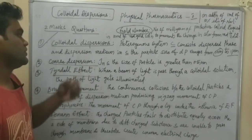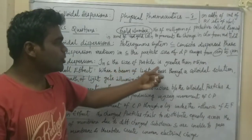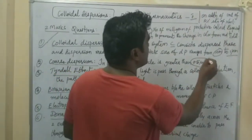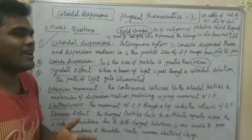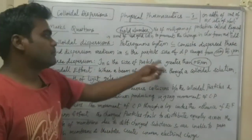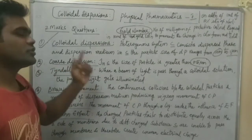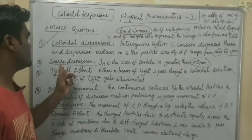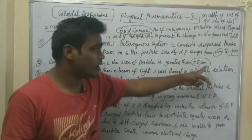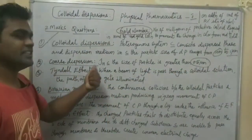Coarse dispersions: it is a system in which the size of the particle is greater than 0.5 micrometers. That is called as coarse dispersion.